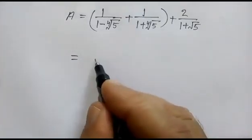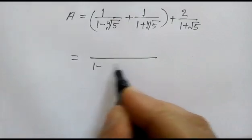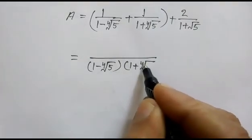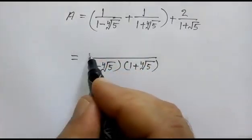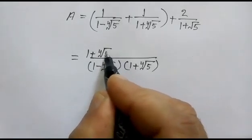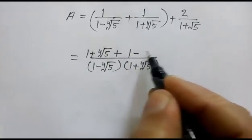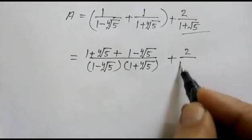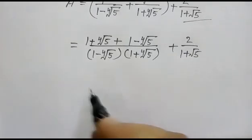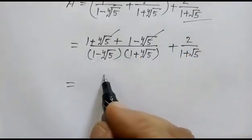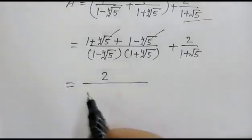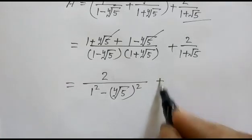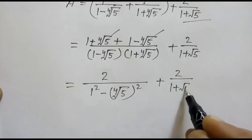Now if we take the first two fractions, the LCM will be (1 minus 4th root of 5)(1 plus 4th root of 5). The numerator becomes 1 plus 4th root of 5 plus 1 minus 4th root of 5, plus 2 over 1 plus square root of 5. The 4th root of 5 terms cancel, giving us 2 over (1 squared minus (4th root of 5) squared), plus 2 over 1 plus square root of 5.